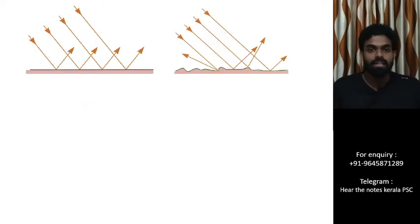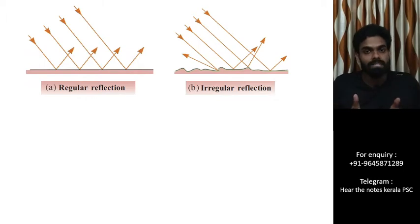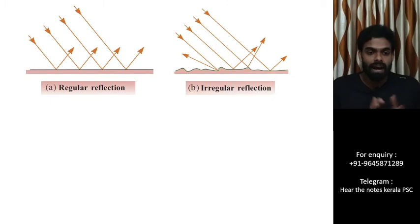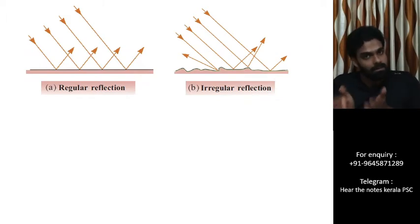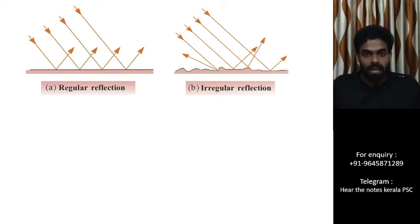Next, we will discuss regular reflection and irregular reflection. These are two figures. On a smooth surface, rays reflect uniformly. On a rough surface, rays reflect in different directions. A smooth or flat surface produces a regular reflection, while a rough surface produces an irregular reflection.